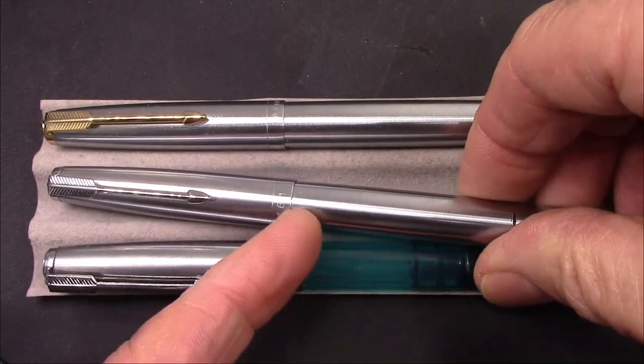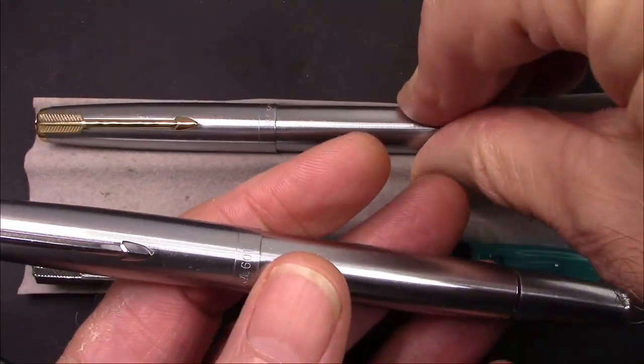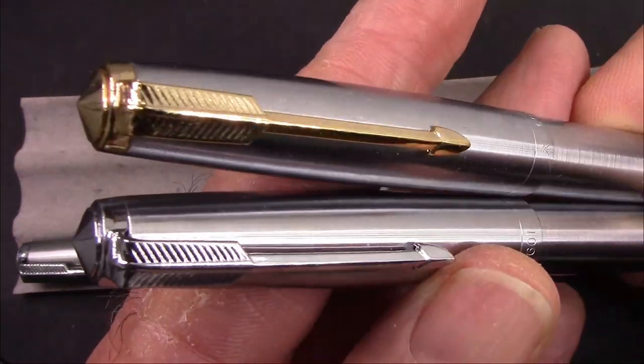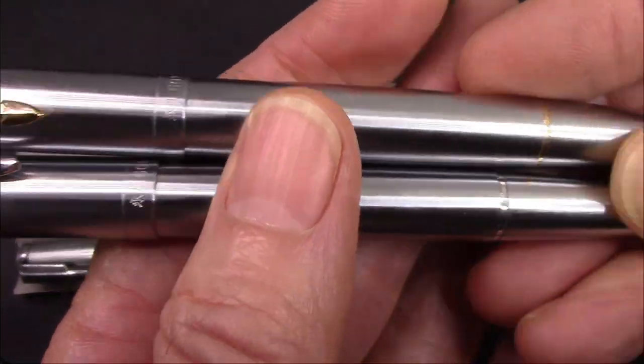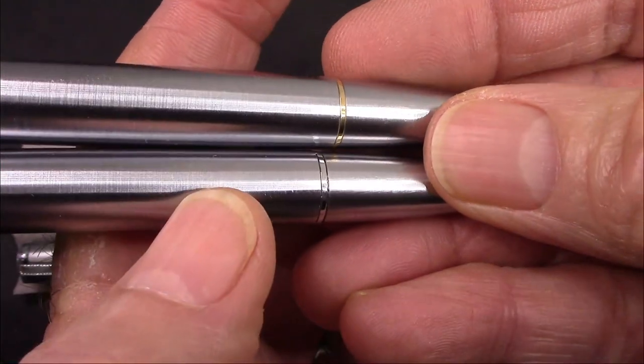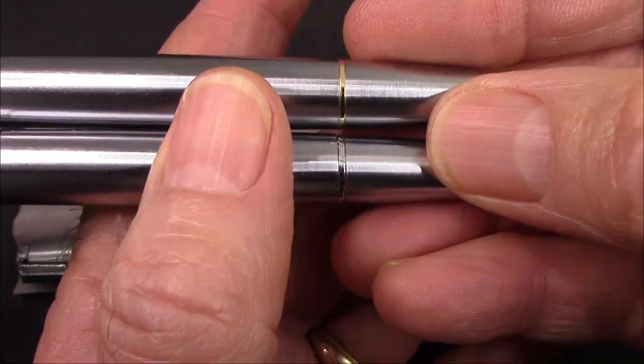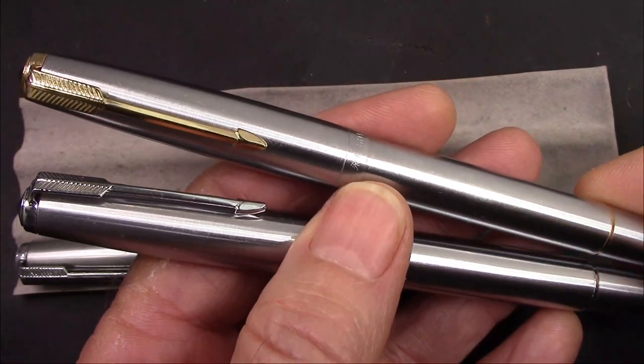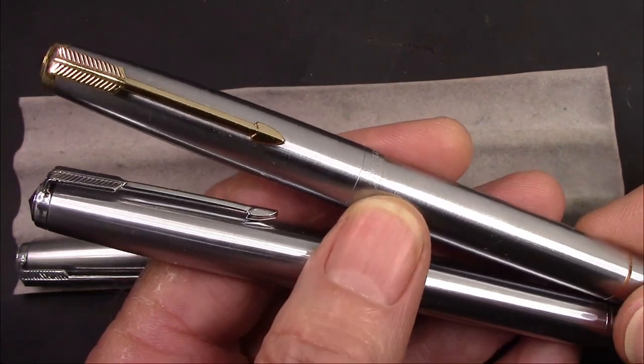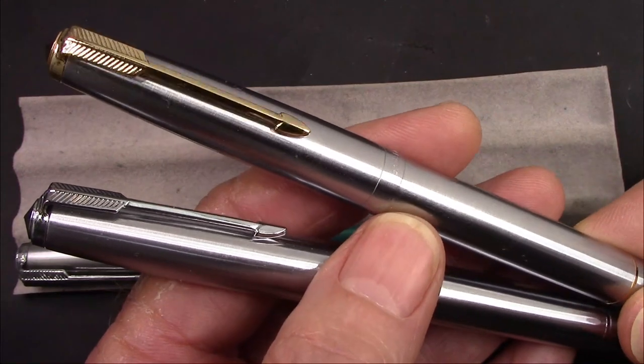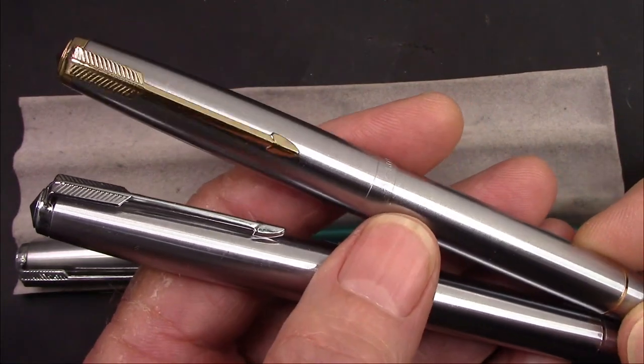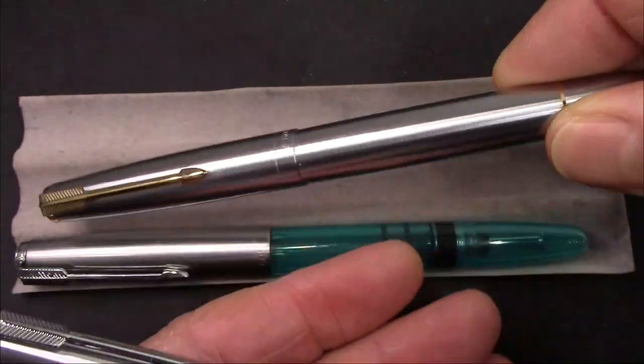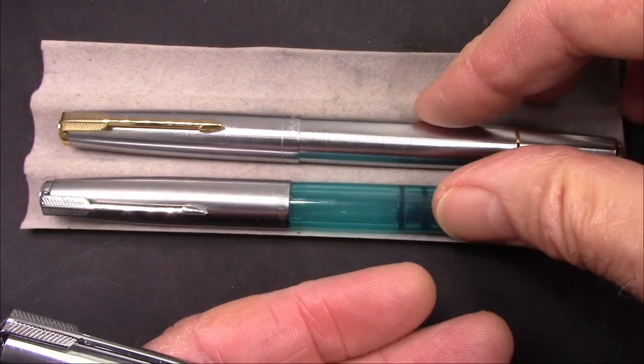We're going to take a look at the effort it took to replace that section. And this is that new flighter that I bought. So this one here has a gold trim on it. And there's gold ring there at the bottom where the blind cap unscrews. So this one here has been inked up and used daily since I got it.